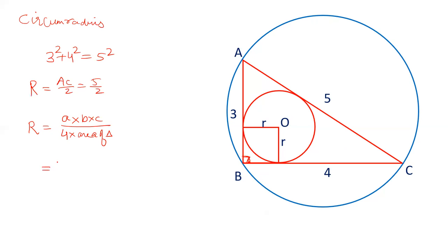Here ABC are sides which are 3, 4 and 5, and area of triangle can be calculated by Heron's formula. Here it is a right angle triangle so we can directly calculate half base into height. This 4 cancel out, this 3 cancel out, this 2, 2 is 4. So the radius is 5 by 2 which we have already calculated.